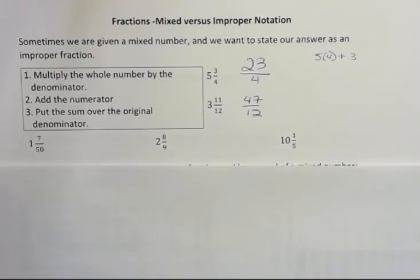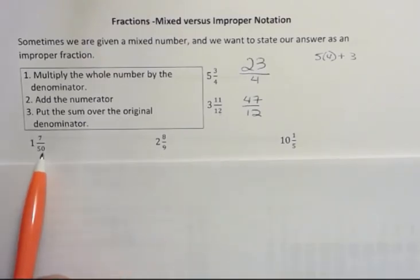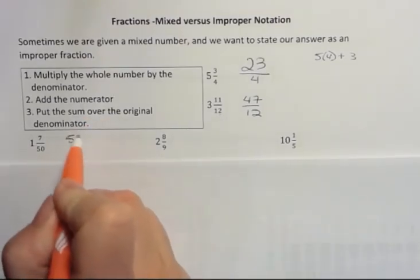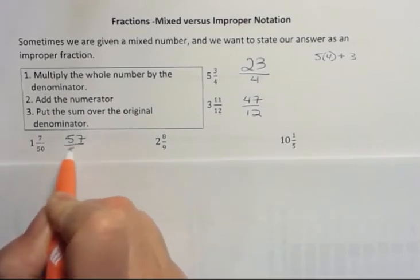You might want to pause the video and try these three problems. It's always good to try these on your own before you just watch somebody else do them. But here's what I'm going to do. 1 times 50 is 50 plus 7 is 57, and that's going to be over 50.